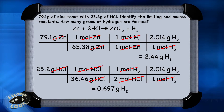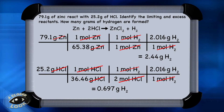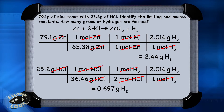0.697 grams of hydrogen is less than the 2.44 grams of hydrogen that we could have produced from zinc. This tells us that not only is 0.697 grams of hydrogen the final answer — the theoretical yield — but it also tells us that HCl is the limiting reactant. We know this because HCl was the reactant that was completely consumed and made the smaller amount of product compared to zinc, which is the excess reactant in our problem.